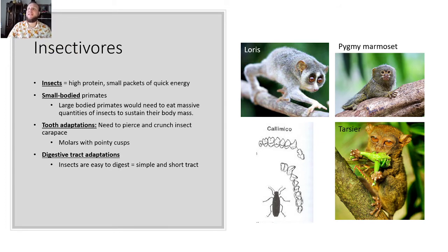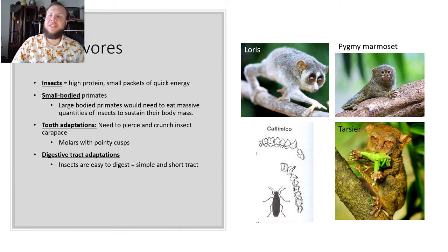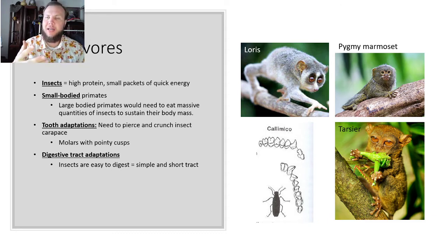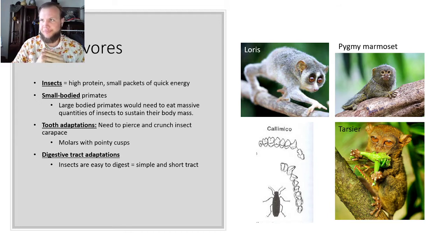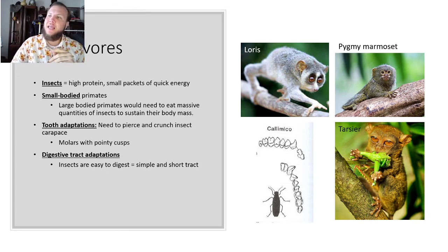Insectivores: insects are high-protein and small packets of quick energy, so these are small-bodied primates. Large-bodied primates would need to eat massive quantities of insects to sustain their body mass. Insectivores need to pierce and crush the insect exoskeleton, so they have molars with pointy cusps. Insects are easy to digest, so they have a very simple and short intestinal tract. Examples include loris, pygmy marmoset, and tarsier.